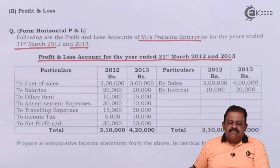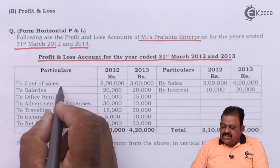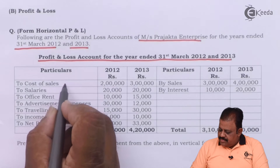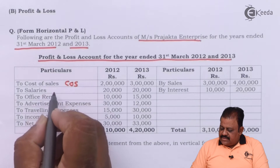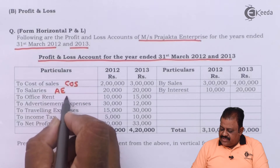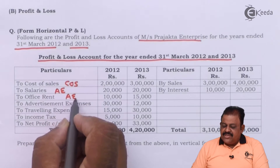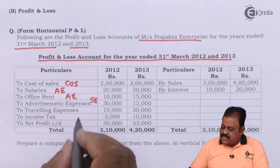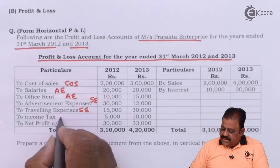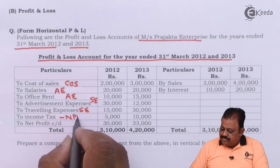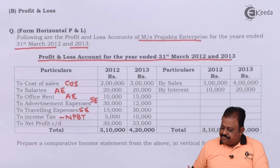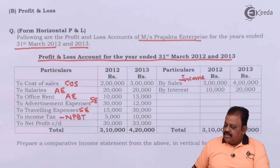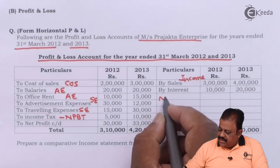Let us go to the items and mark them for the vertical income statement. Cost of sales will be deducted from sales to arrive at gross profit. Salaries, administration expenses, office rent are administration expenses. Advertisement and travelling expenses are selling expenses. Income tax is deducted from net profit before tax. Sales interest is non-operating income.